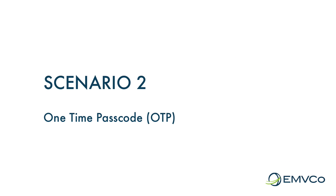For authentication scenario number two, we will look at the OTP, or one-time passcode. Here is an example of a challenge flow where the one-time passcode is delivered to the cardholder and the authentication is done directly in the application. For the purpose of creating a simple-to-follow demonstration, SMS was used to deliver the OTP.